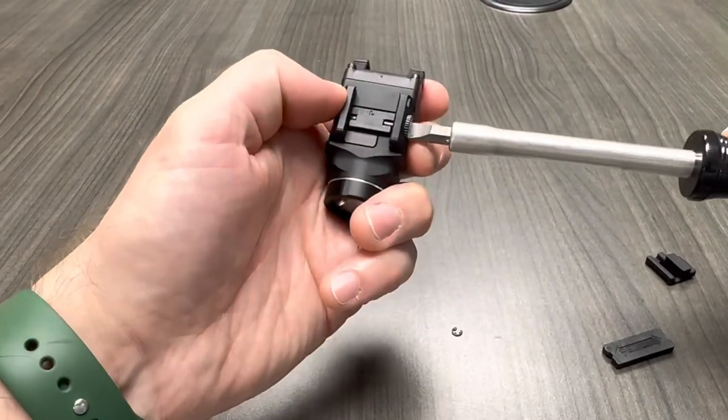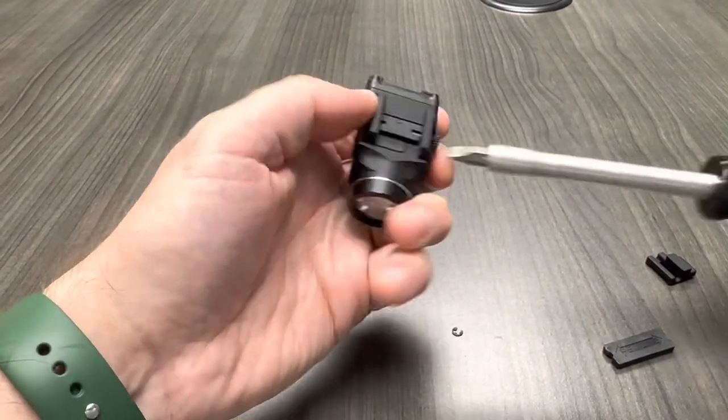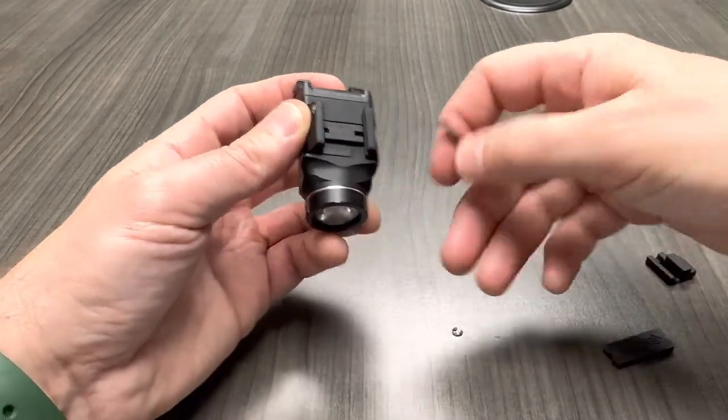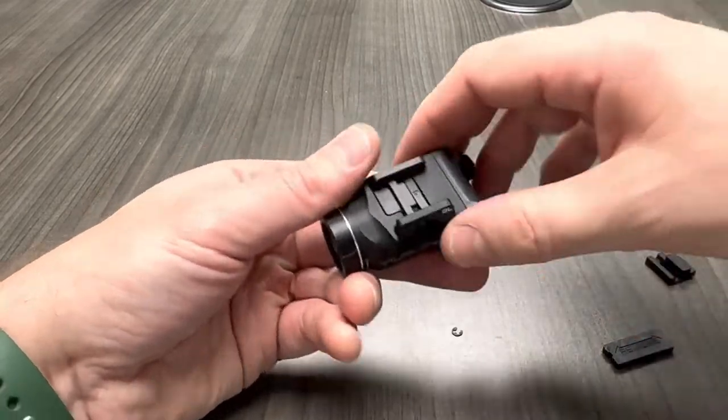Once that's off then you can back this crossbowl all the way out. It has a little crest to crest wave spring on it which you want to make sure you don't lose. Take that and set it right there so that the spring stays with it.